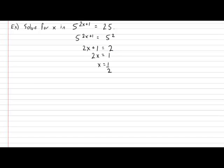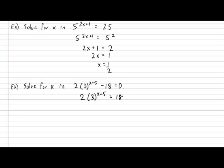In our next example, we'll try something a little more complicated by tossing in some more items. Find x in the following expression: 2 multiplied by 3 exponent x plus 5, subtract 18, equals 0. You can see I threw in a few more objects — the 2 and the negative 18. What you need to do first is isolate the actual base attached to the exponent, in this case the 3. This means tossing the negative 18 and the 2 to the other side. Using regular algebra, we get that 2 multiplied by 3 exponent x plus 5 equals 18. Continuing with regular algebra, we get 3 exponent x plus 5 equals 18 divided by 2, which is 9.